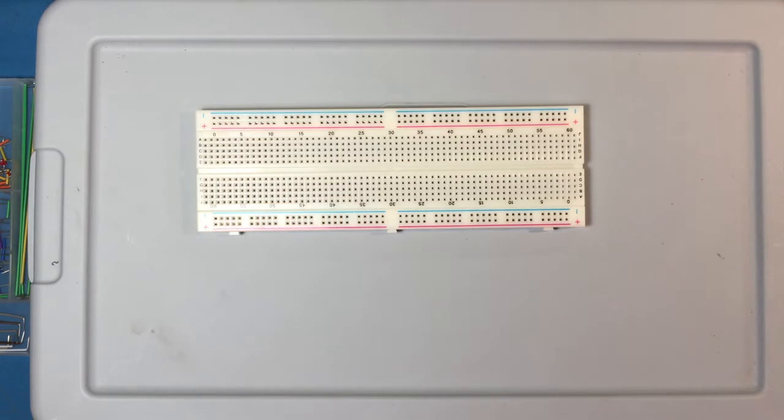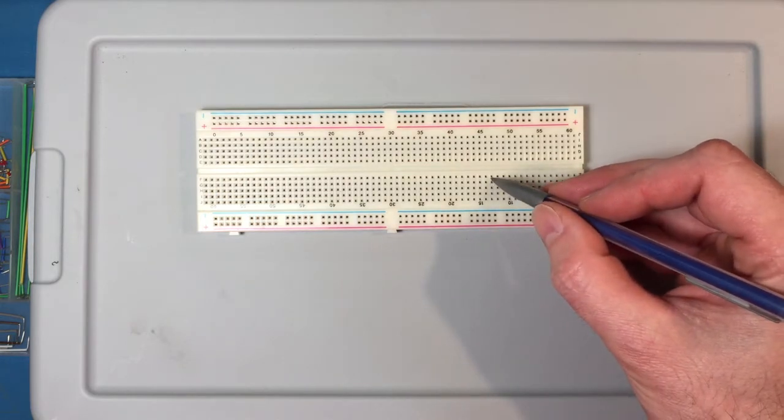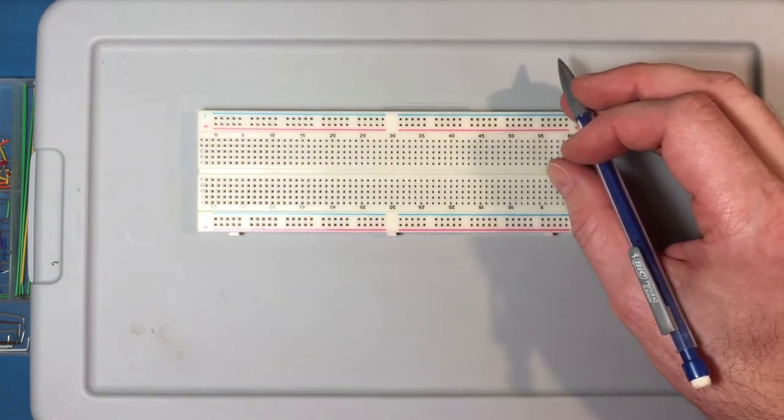They all function basically the same way. So the most important part of what they do is form electrical connections between the holes in the breadboard. And there's a pattern on there.